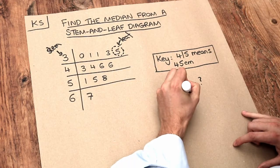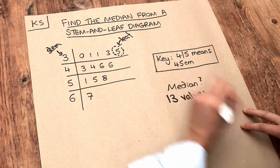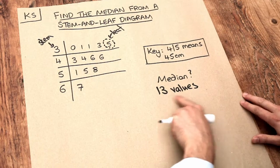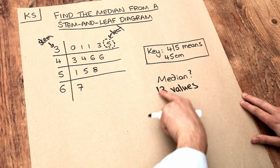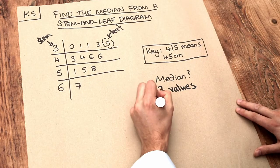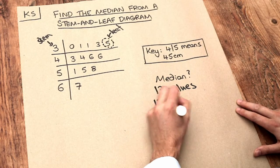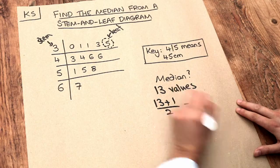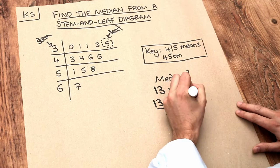Now one way you can find the position of the median is to add one to that value and then divide it by two. So if we add one and divide by two, that's 14 divided by 2. We want the seventh value.